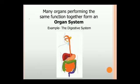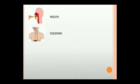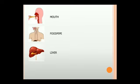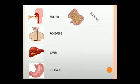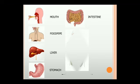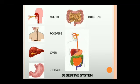A single organ cannot digest our food; a group of organs carries out digestion of food. In this system, the mouth, food pipe, liver, stomach, and intestines are the organs which perform the function of digestion of food and form the digestive system.